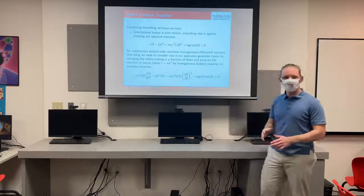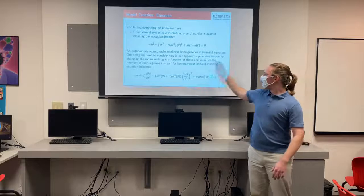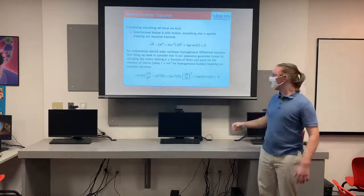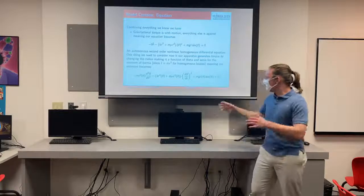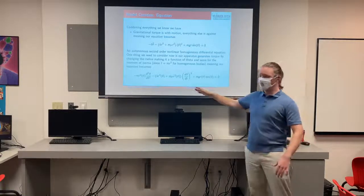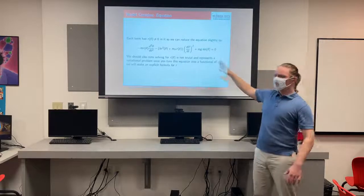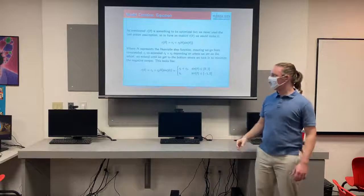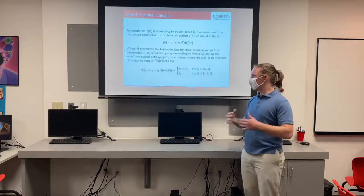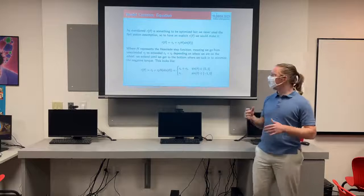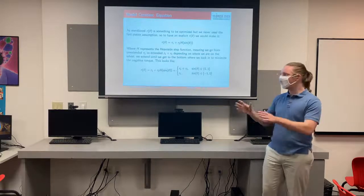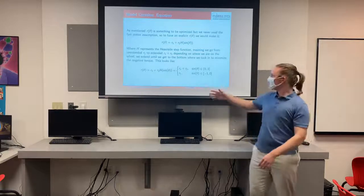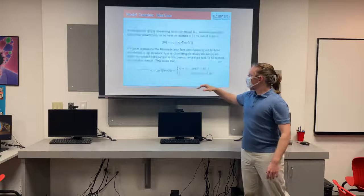This is a very complex system that we obviously cannot solve analytically. But we can simplify it: since the moment of inertia I equals mass times radius squared, we can bring in the radius function and eliminate terms, as every term has a non-zero radius. To maximize the radius would represent a variational problem — very difficult — so instead we define the radius using a Heaviside function, meaning we extend at the start and then contract halfway through, giving a nice piecewise definition.